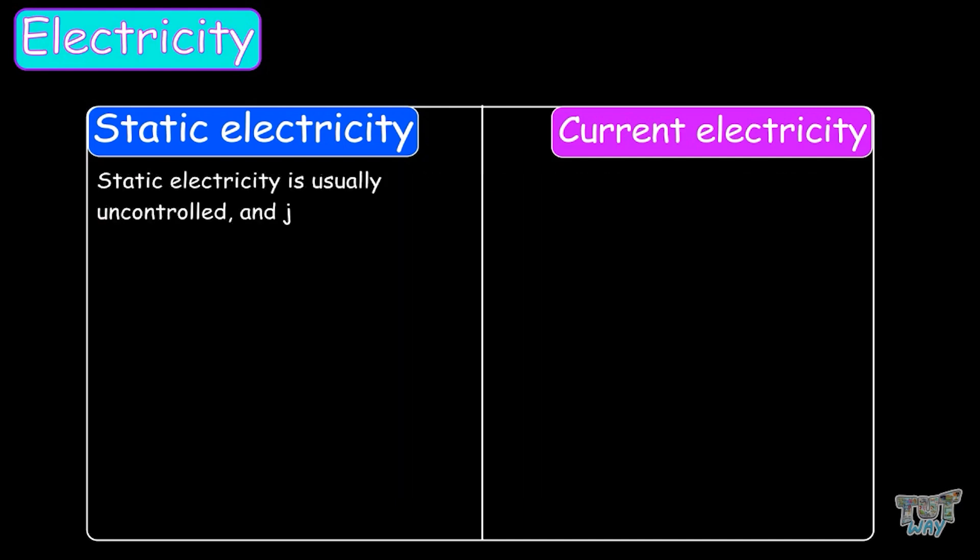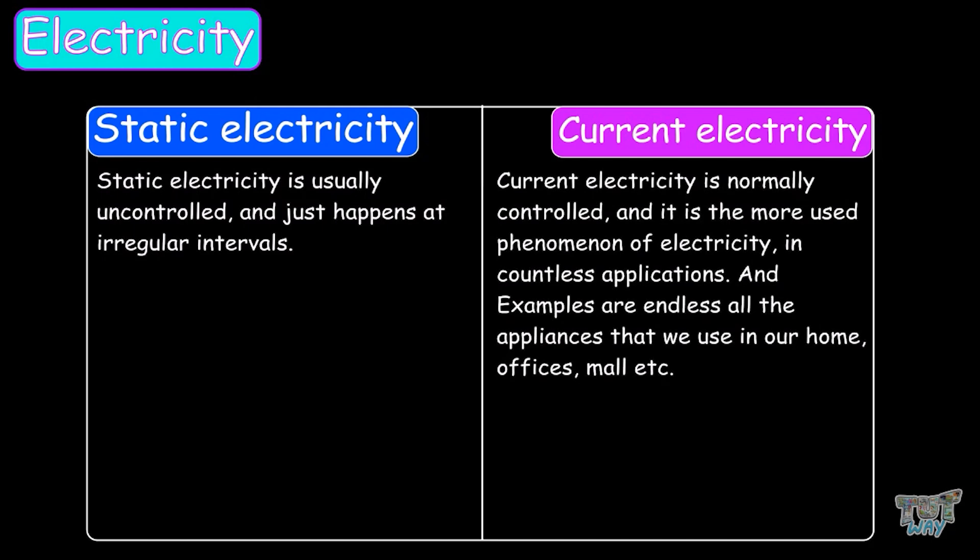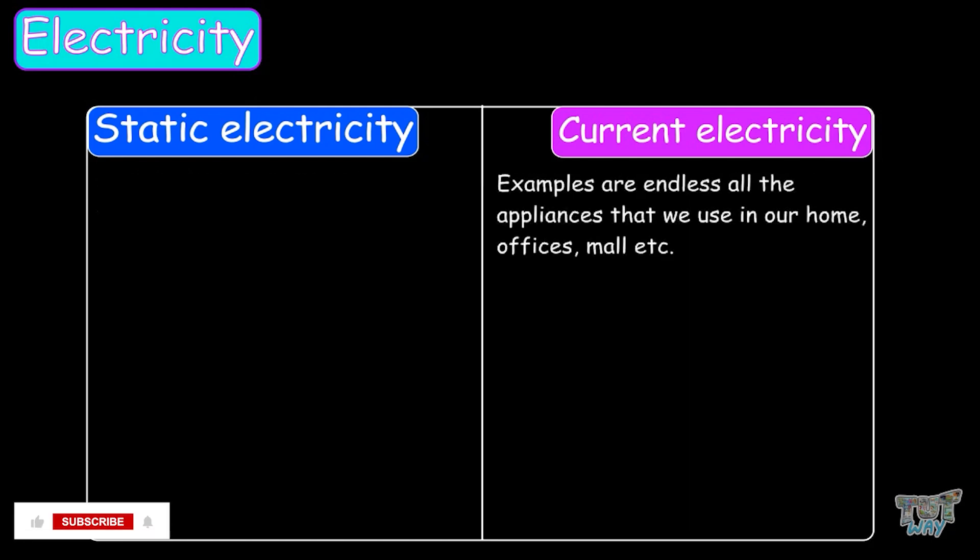Static electricity is usually uncontrolled and happens at irregular intervals. Current electricity is normally controlled, and it is used in countless applications, and the examples are endless. All the appliances that we use in our homes, offices, malls, etc., use current electricity.